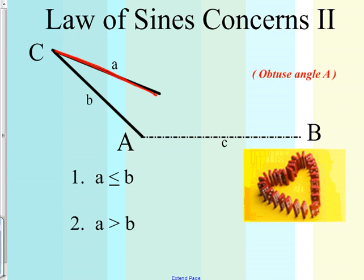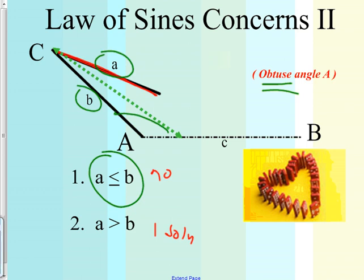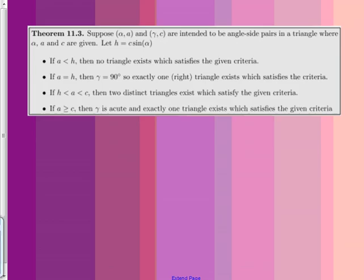Doing one last little talk about Law of Sines. There's another ASS triangle where we have an obtuse angle, a side, and another side. If A is less than or equal to B, it's not long enough to make a triangle — there's no area inside. So A has to be longer than B to work. This gives no solutions or one solution. The angle-side-side triangles can become a pain.